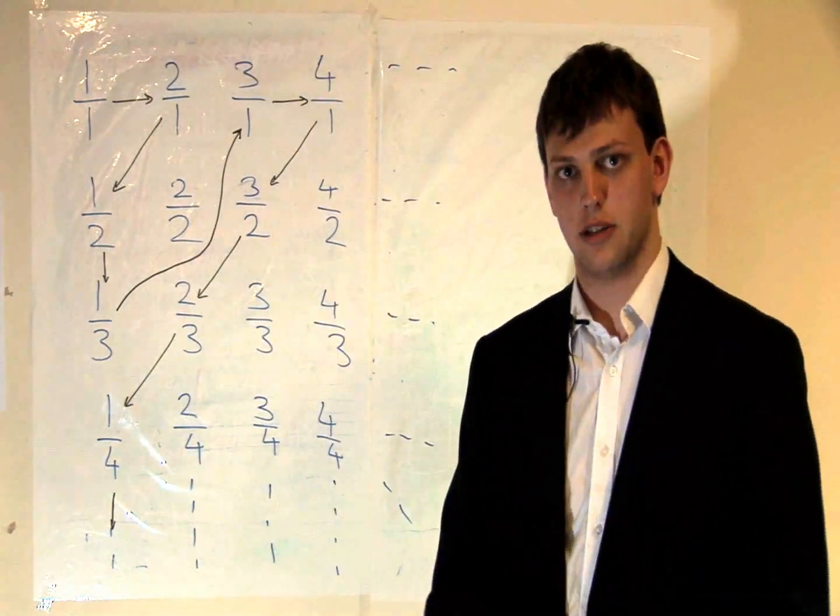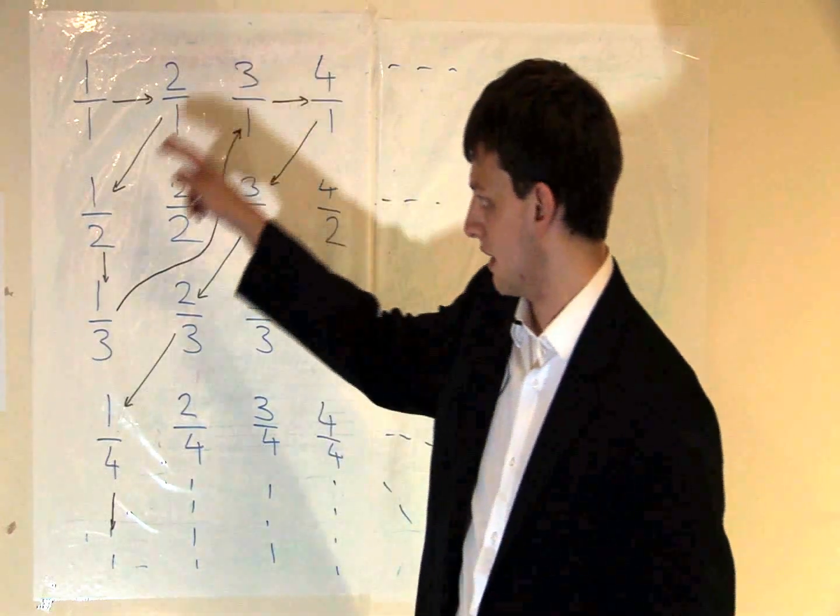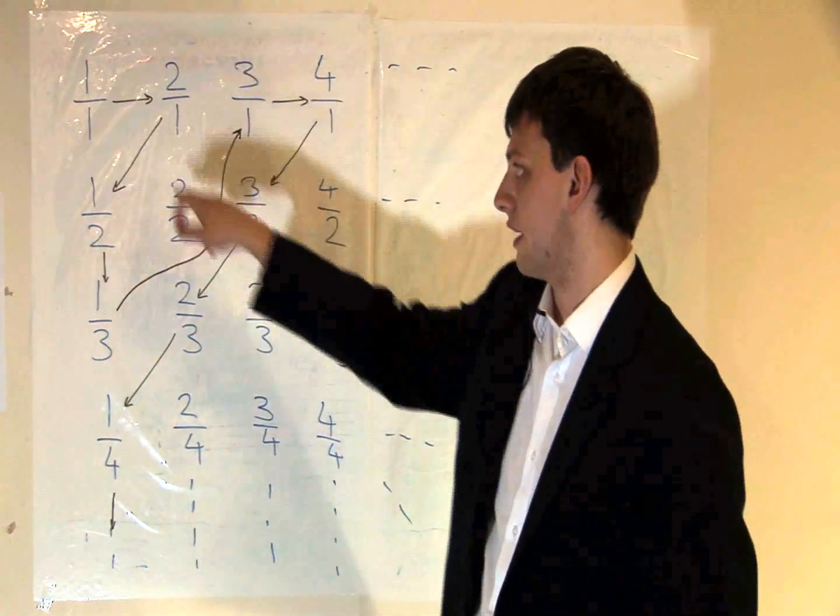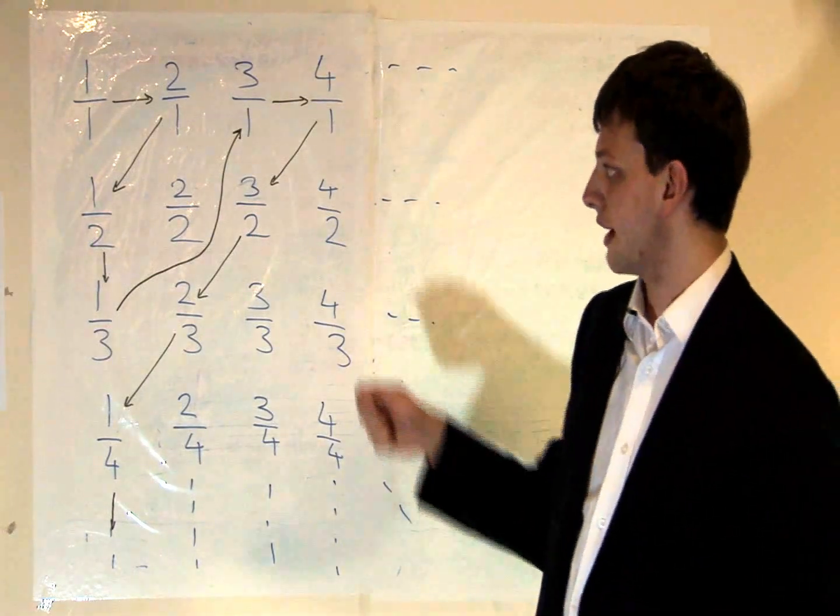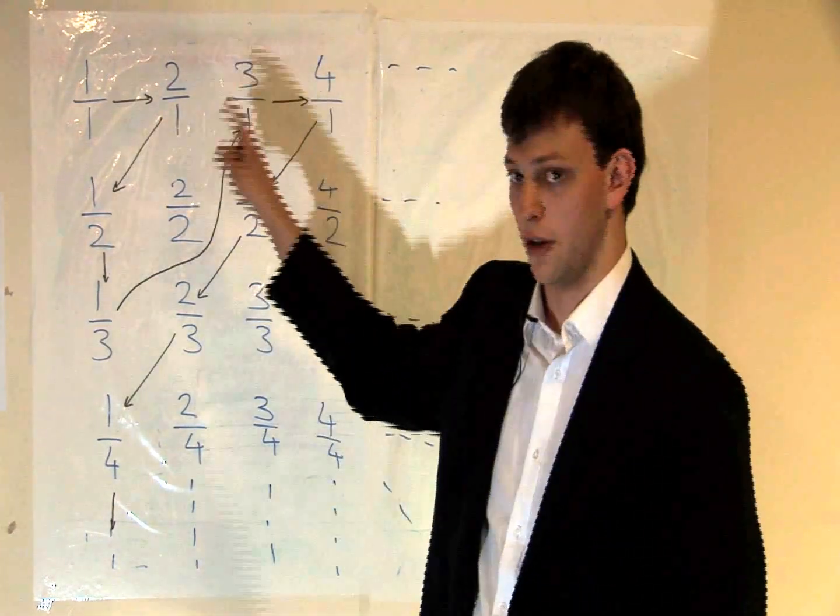Now to match these fractions with the whole numbers, we start at one and trace out the diagonals like this, skipping out any fractions which are the same as ones we've already covered. And in this way we can write out a list of all the fractions by following the arrows.